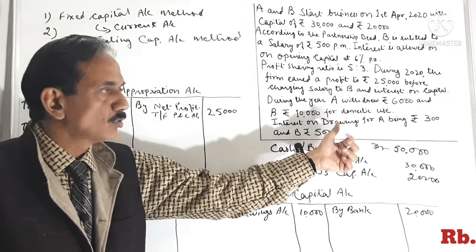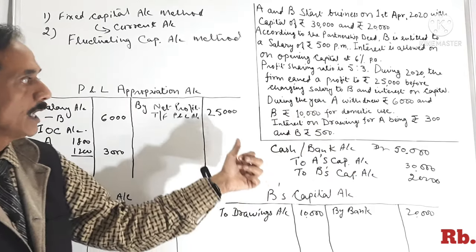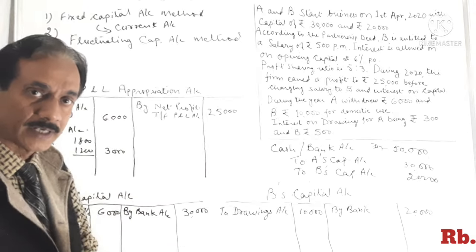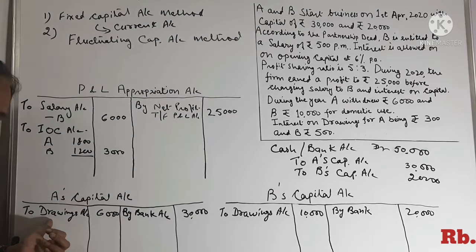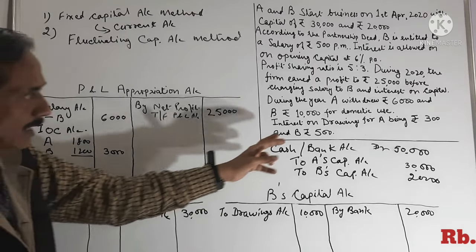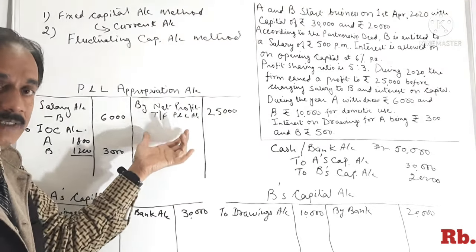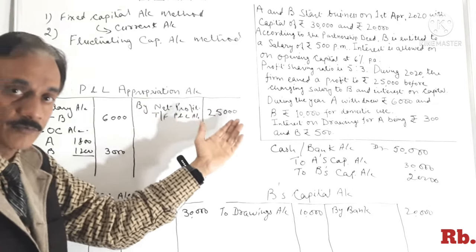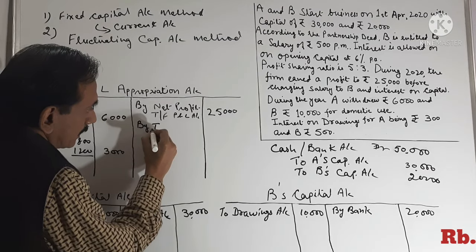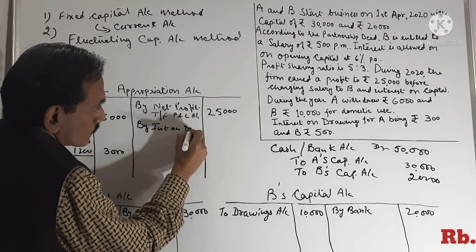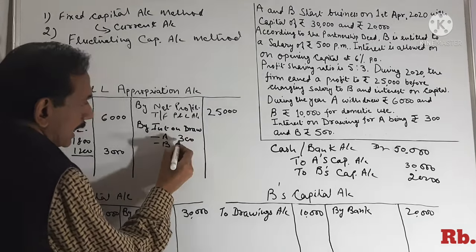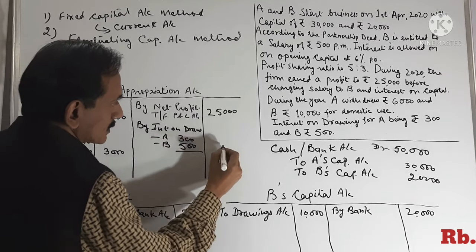Interest on drawings: A ke liye Rs.300 aur B ke liye Rs.500. Interest on drawings jo hai yeh company ke liye profit hai, kyunki A ne apni amount withdraw ki thi for domestic purpose, uske upar company interest charge kar rahi hai — Rs.300 A se aur Rs.500 B se. To firm ke liye yeh profit hai, isko hum profit mein add kar denge. By interest on drawings: A Rs.300 and B Rs.500, total Rs.800.